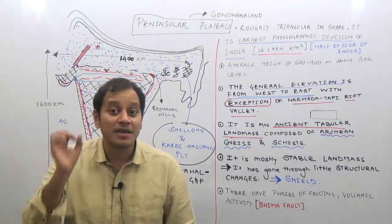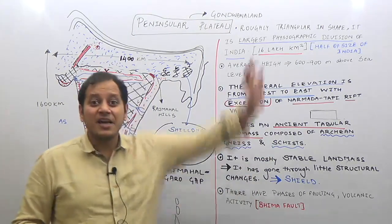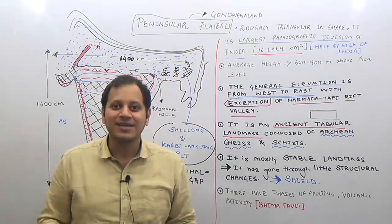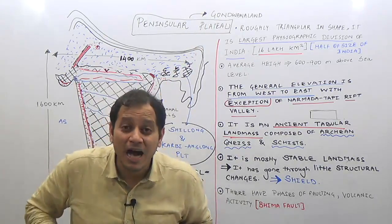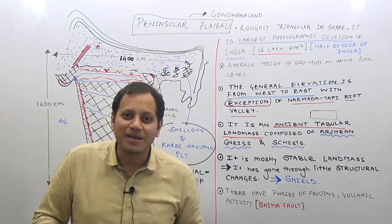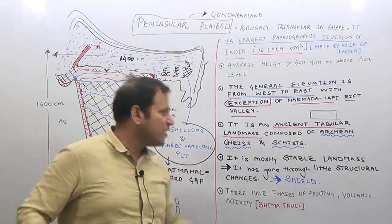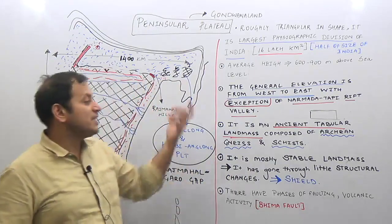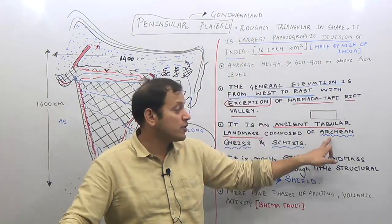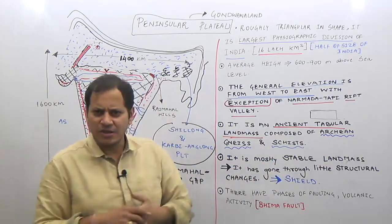'Archean' is derived from the word 'archaic,' meaning very old or ancient. So the rocks here are of Archean age. The older rocks of the earth were subjected to heat and pressure and are therefore generally metamorphic rocks. Gneiss is a metamorphic rock derived from granite; Schist is a metamorphic rock derived from slate. The peninsular plateau is composed of Archean Gneiss and Schist.